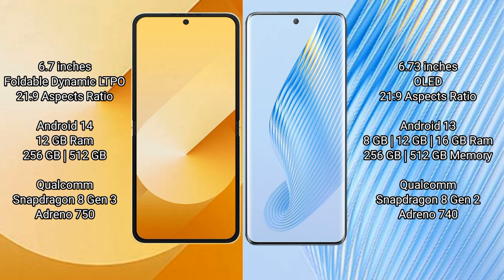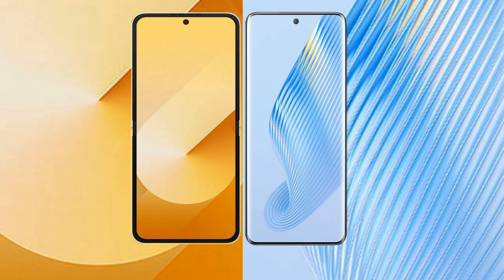Samsung Galaxy Z Flip 6 comes with 12GB RAM and 256GB or 512GB internal storage, powered by the Qualcomm Snapdragon 8 Gen 3 processor with GPU Adreno 750. Honor Magic 5 comes with 8GB, 12GB, or 16GB RAM and 256GB or 512GB internal storage, powered by the Qualcomm Snapdragon 8 Gen 2 processor with GPU Adreno 740.